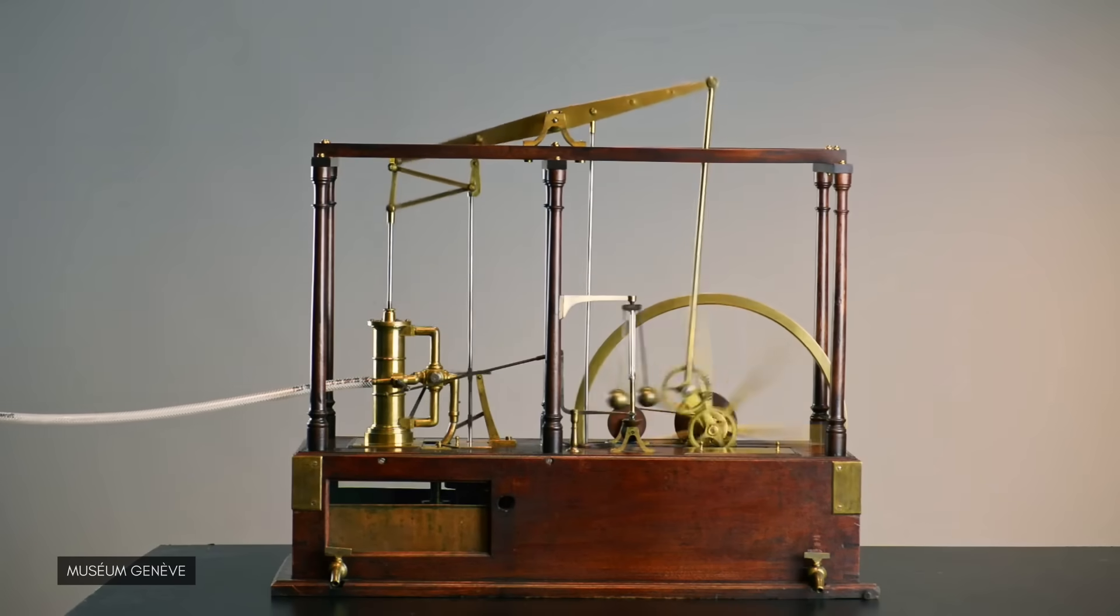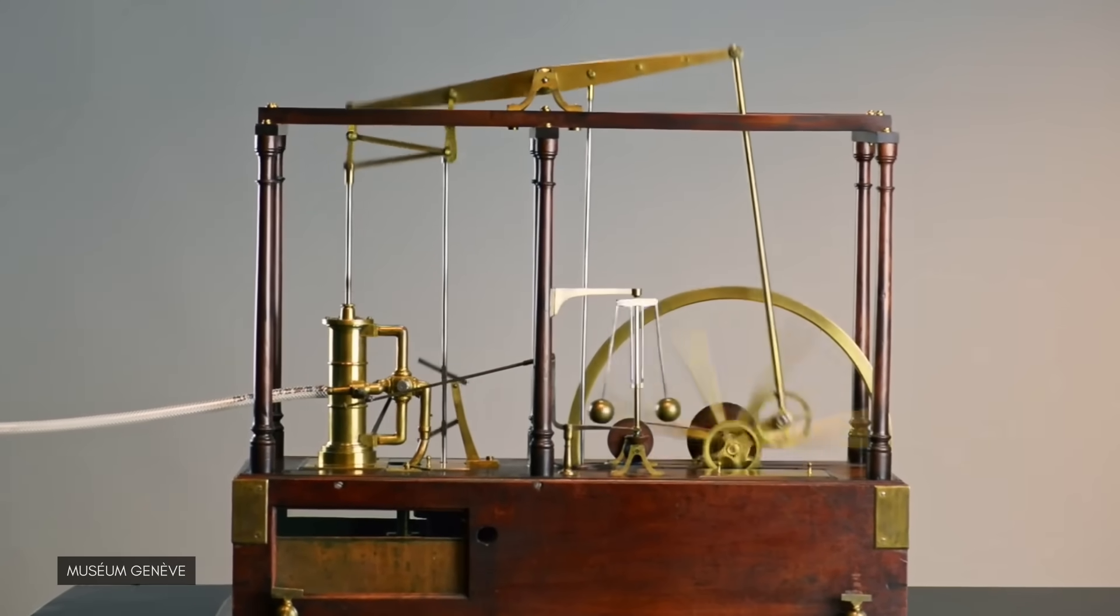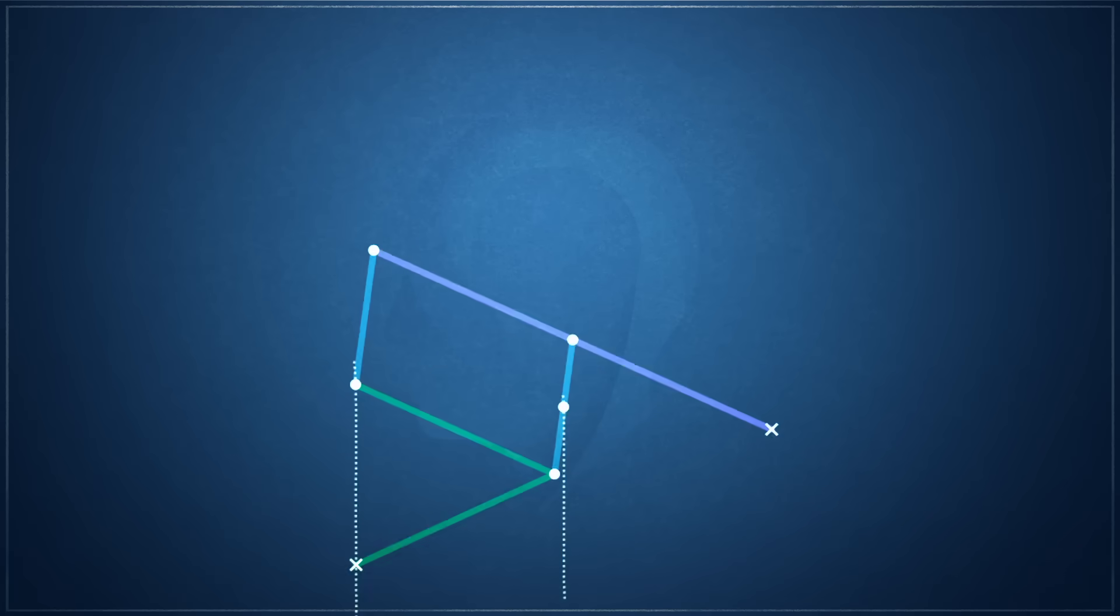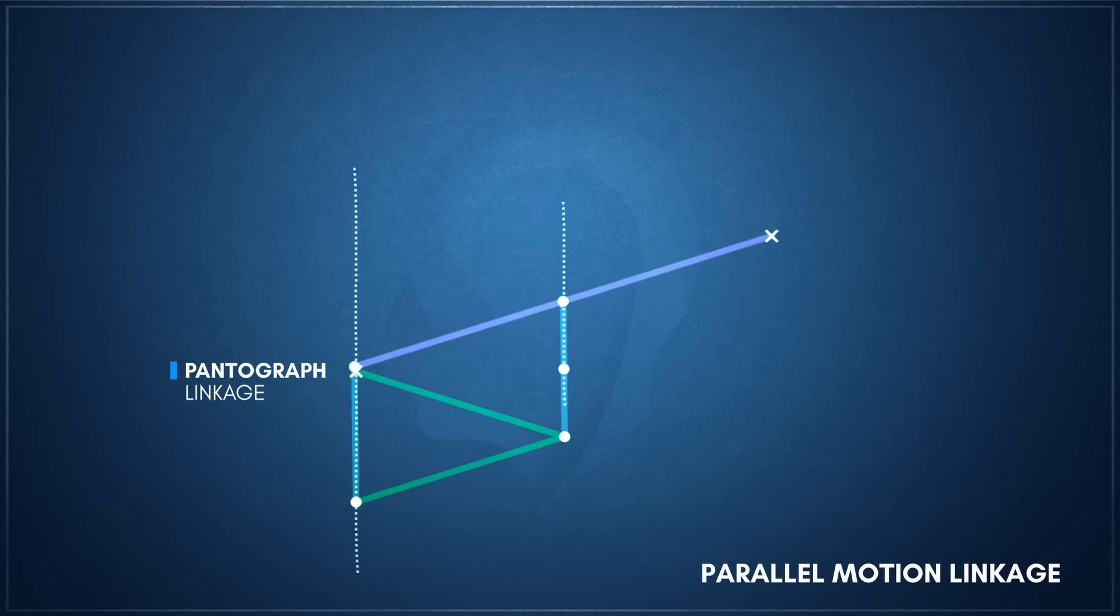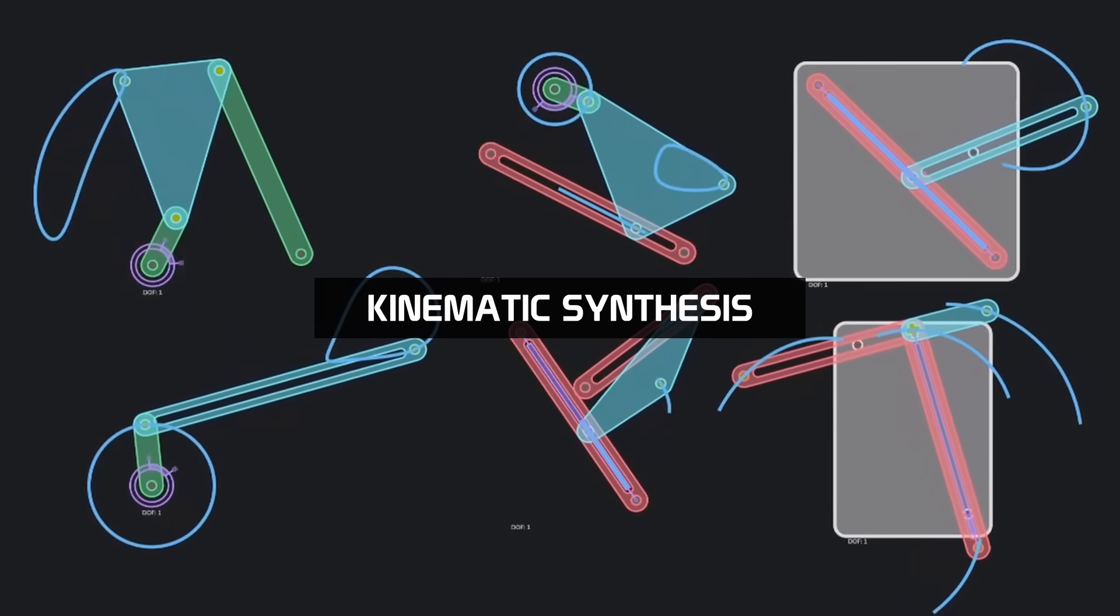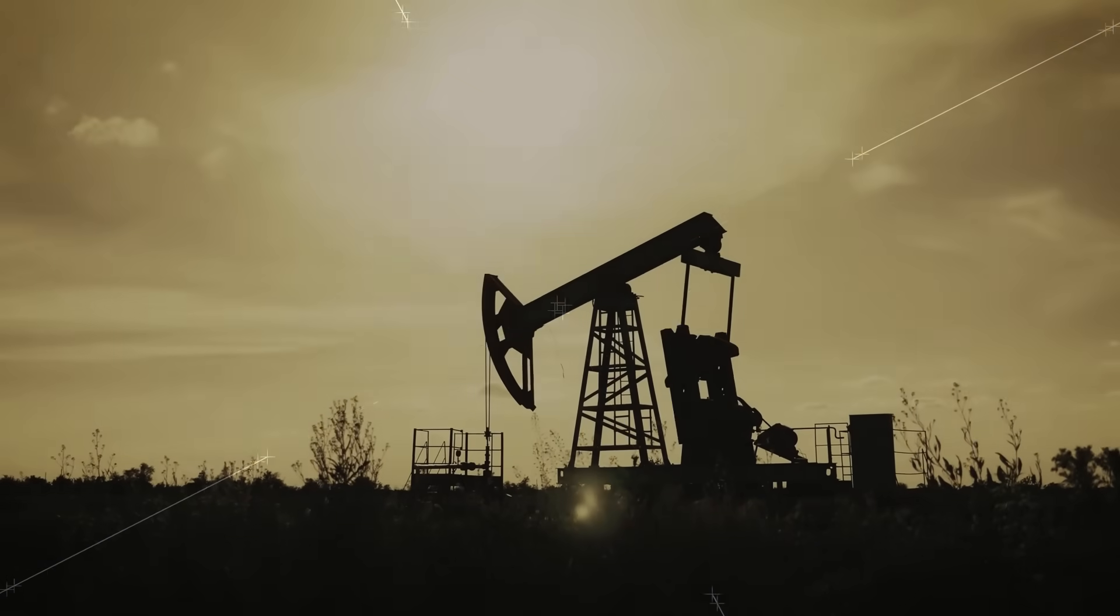While the Watt's linkage was a conceptual breakthrough, it was not the final mechanism used in his engines. The motion it generated needed to be transferred from the midpoint of the Watt's linkage to the piston rod itself and required more travel. To achieve this, Watt combined his linkage with a pantograph, a well-known parallelogram linkage used by draftsmen for copying and scaling drawings. This created a more complex, but compact six-bar linkage called the parallel motion linkage. Watt's introduction of the parallel motion linkage did more than just solve an engineering problem. It introduced kinematic synthesis, or the process of designing a mechanism to achieve a specific desired motion, to the Industrial Revolution. Over the next century, a multitude of straight-line mechanisms would emerge, with some being purely academic in nature, while others becoming critical elements of machinery and vehicle designs.